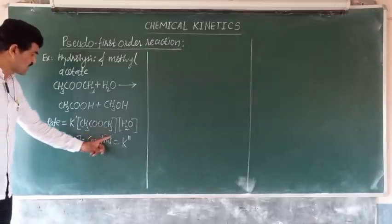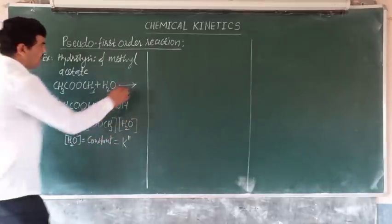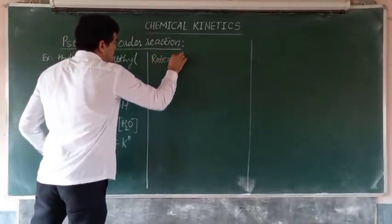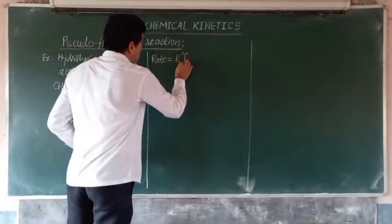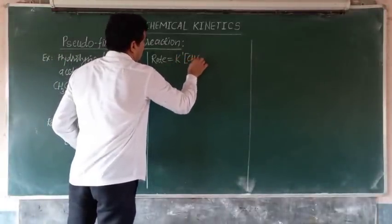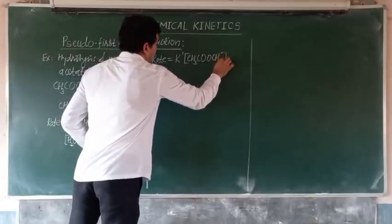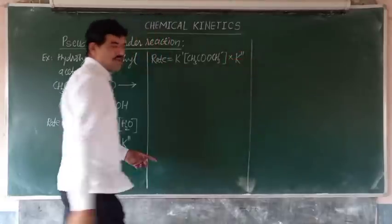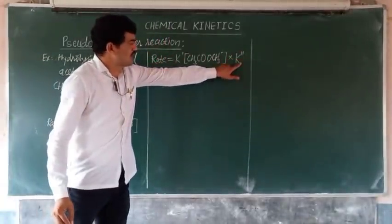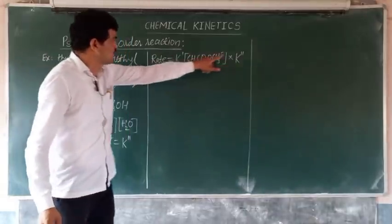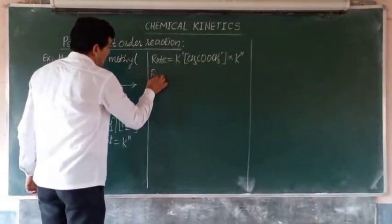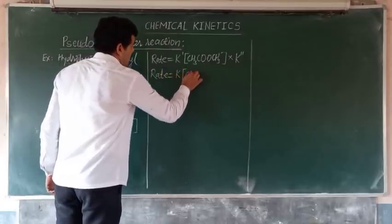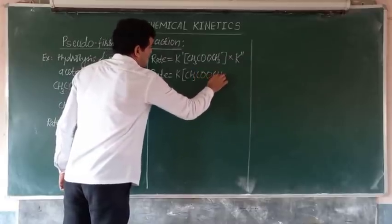Now we can put this constant into the rate law. Therefore, the rate law will change to: rate = k' × [CH3COOCH3] × k''. Here k' and k'' are both constants, and their product is another constant k, so the rate law becomes: rate = k × [CH3COOCH3].